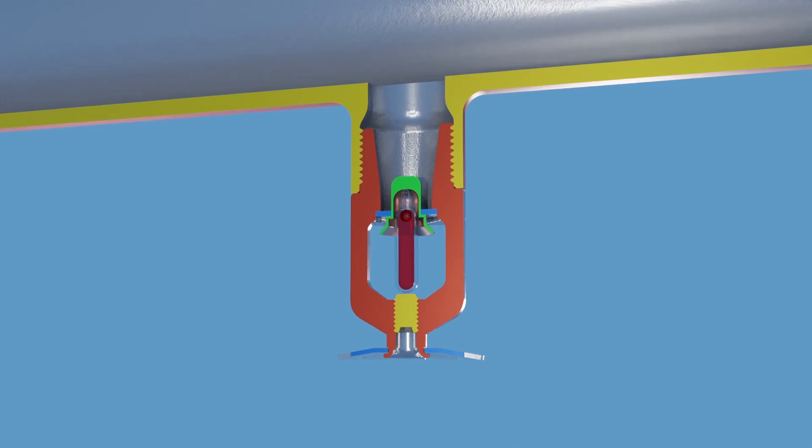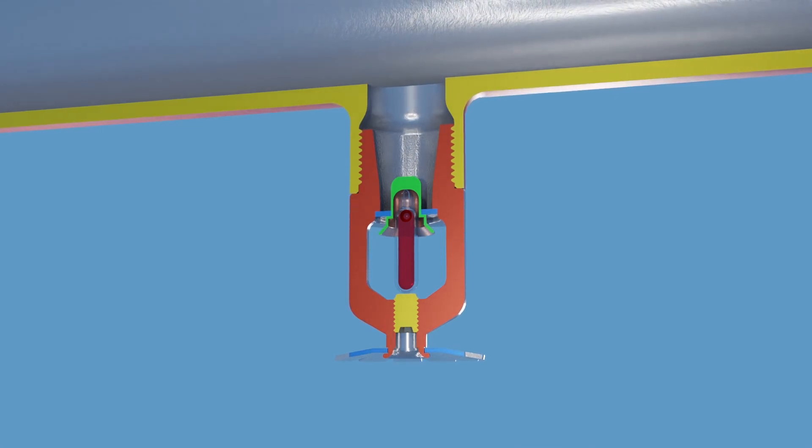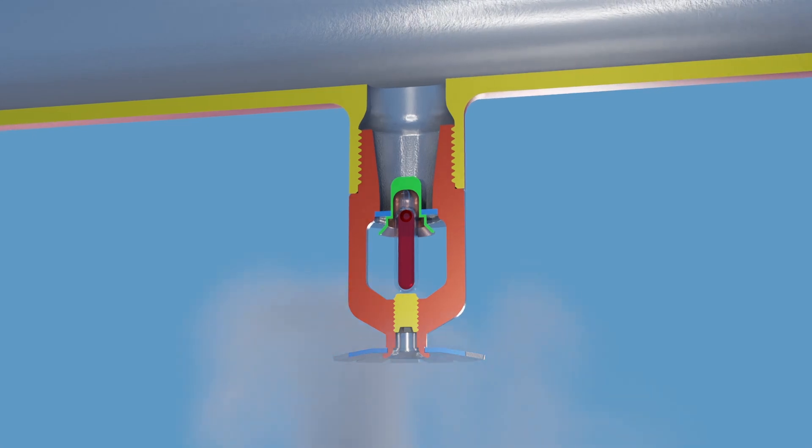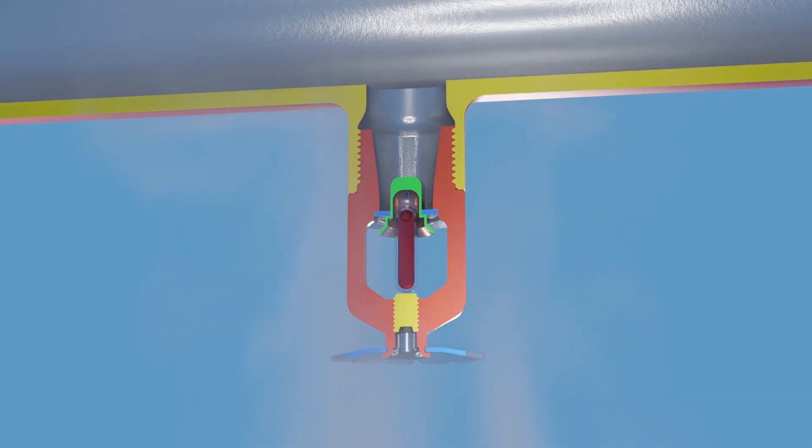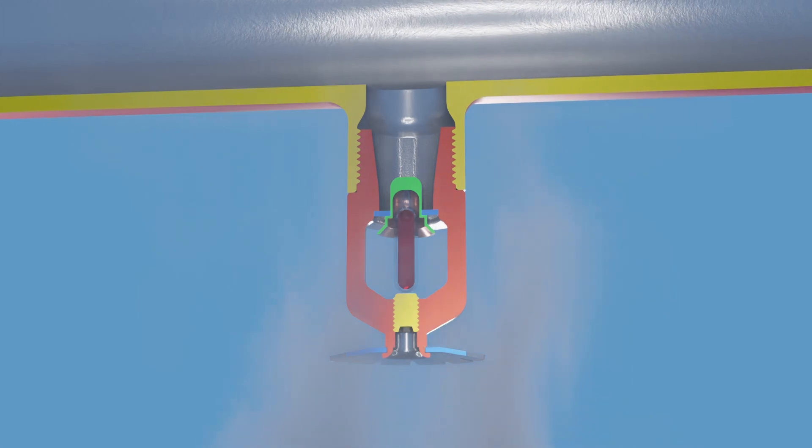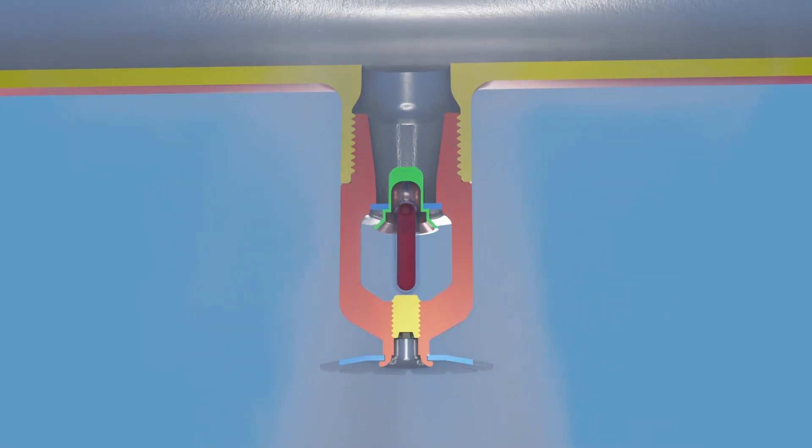Now let's see how the sprinkler works. When a fire starts, it quickly increases the surrounding air temperature. As the hot air rises and reaches the sprinkler head, the liquid inside the bulb begins to expand.